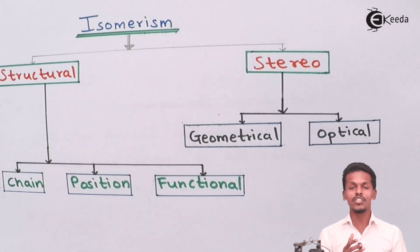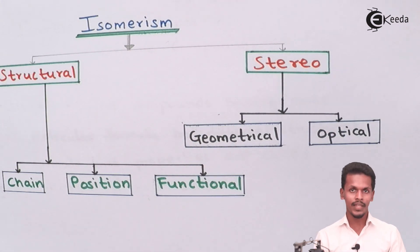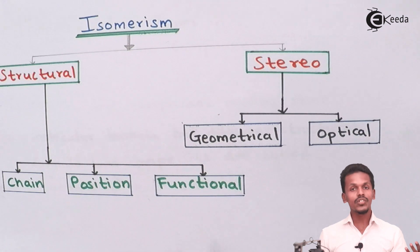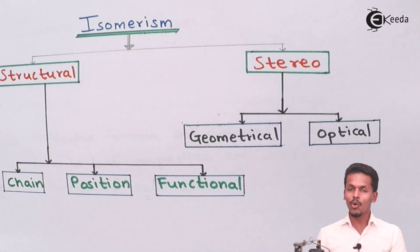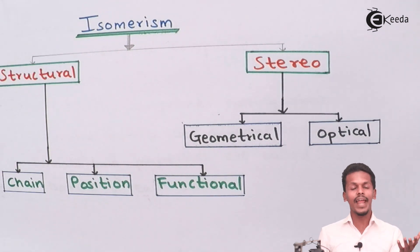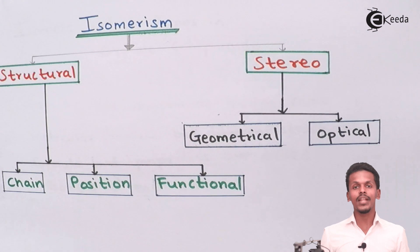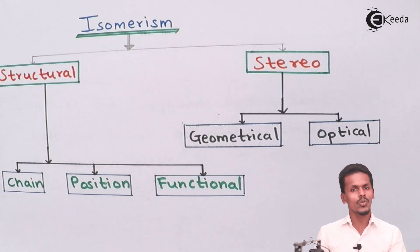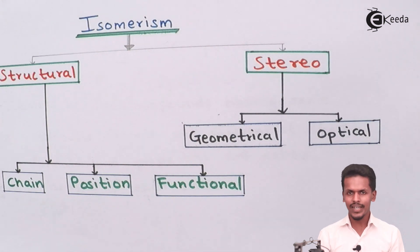Position isomers are isomers that differ in the position of the functional group. We will take an example to show what position isomers actually are. Functional isomers are a type of structural isomers in which both isomers have the same molecular formula but differ in the functional group. For example, an alcohol containing an OH group can also be written in the form of an ether.